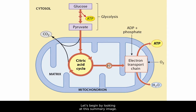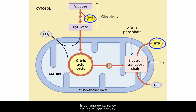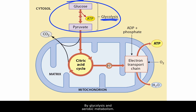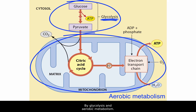Let's begin by looking at this summary image. ATP, shown in bright yellow to indicate energy, is our energy currency fueling muscle activity and is generated in two ways: by glycolysis and aerobic metabolism.